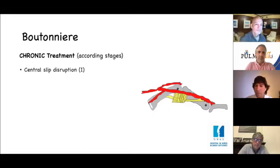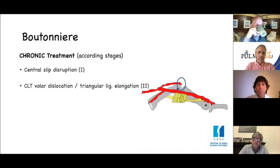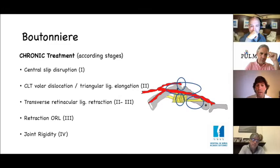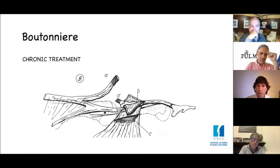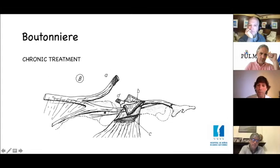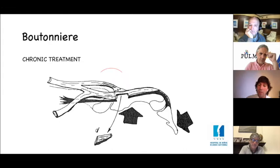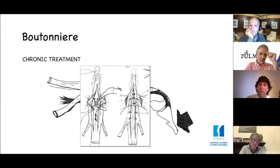In chronic boutonniere we address: central slip disruption, palmar translocation of the conjoined lateral bands, elongation of the triangular ligament, transverse retinacular ligament retraction, oblique retinacular ligament retraction in stage 3, and joint contracture in stage 4. We reconstruct the central slip with advancement — removing fibrous tissue and preserving remnant tissue at the P2 insertion — release the transverse retinacular ligament, release the oblique retinacular ligament if the retinacular test is positive, and close the triangular ligament.